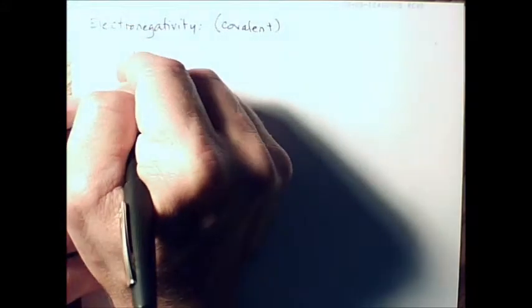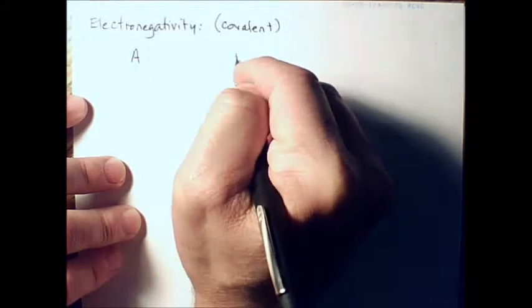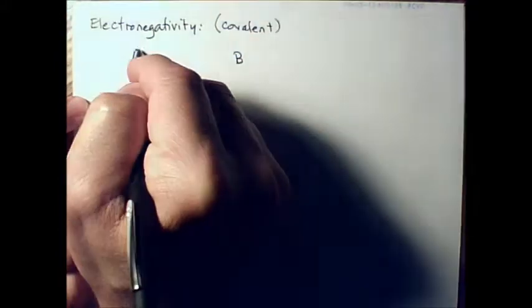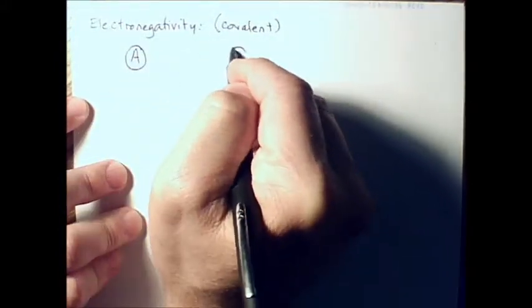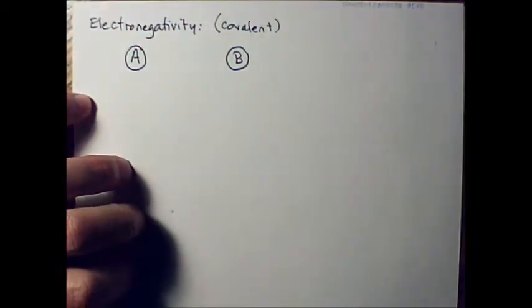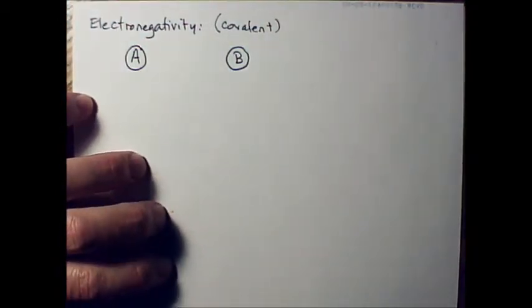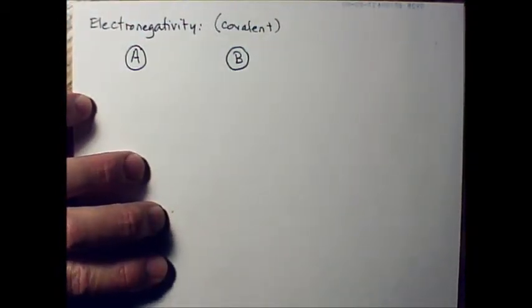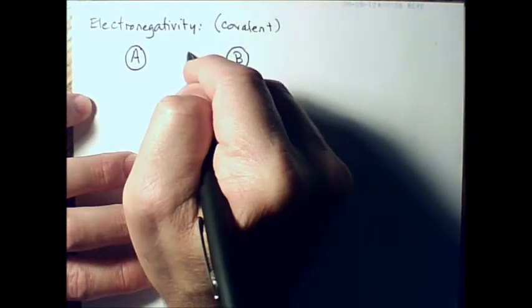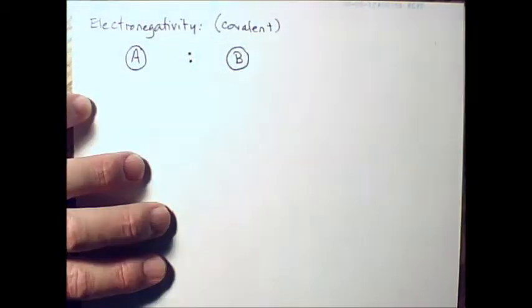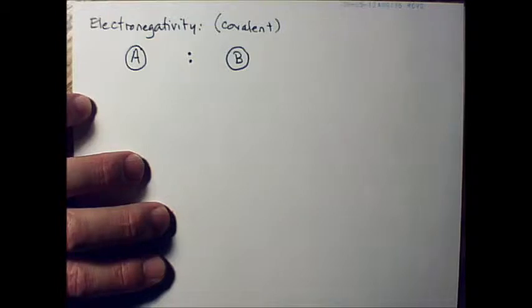So if I have two atoms, we're going to call them A and B. I could call them Fred and Lucy, but I'm going to call them A and B. They're going to share electrons. That's what you do with covalent bonding. They're going to share these two electrons.